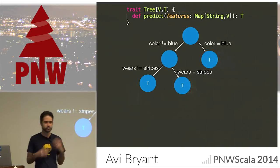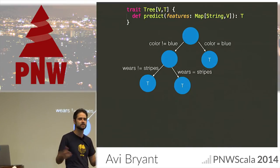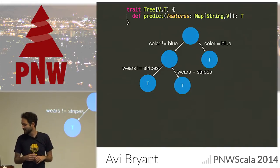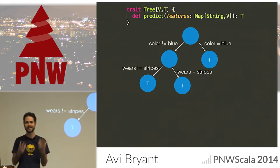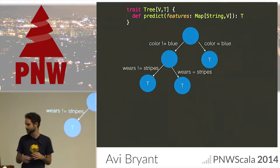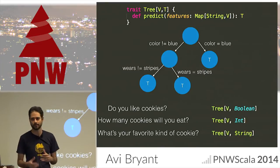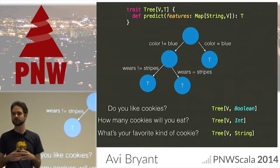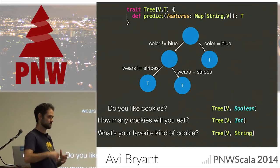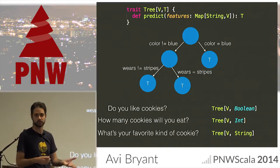We said those predictions are of type T — a generic type T. People also call the predictions targets, which is why I use T. There are different kinds of predictions we might want to make. You might think about a binary classifier — which is what we've been talking about — that tries to answer questions like: do you like cookies?